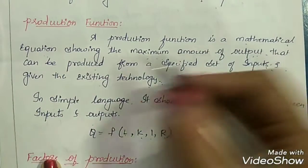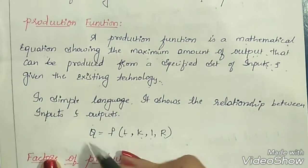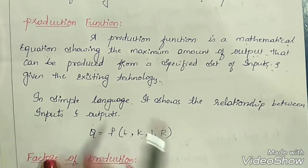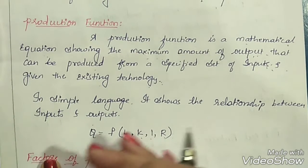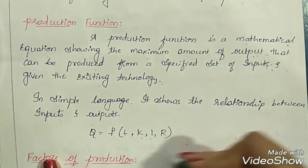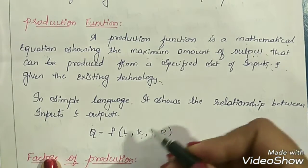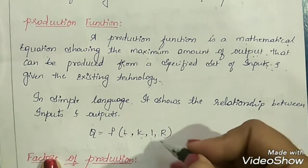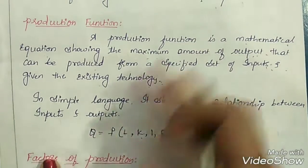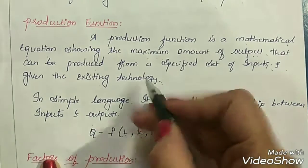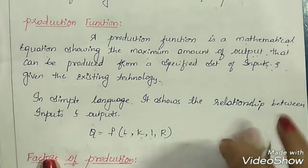It is a mathematical equation. That equation is: Q refers to output, and it is equal to F — a functional relationship — of L (labor), K (capital), I (land), and R (raw material). There can be any other input factors also, like technology, entrepreneurship, organization, etc.